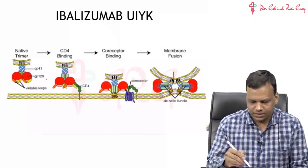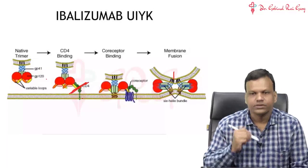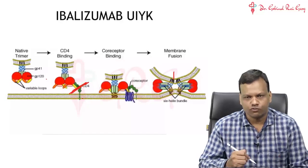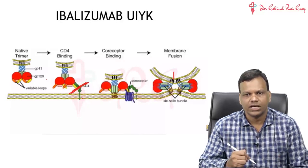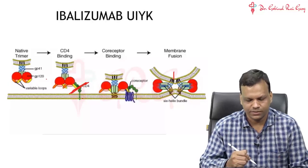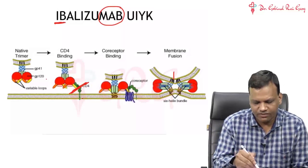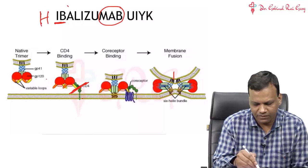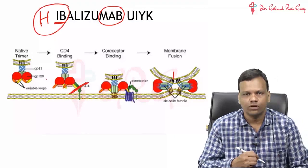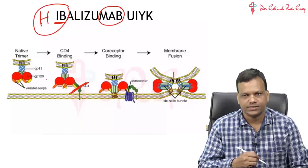Ibalizumab is inhibiting the binding of GP120 to CD4 cells. Basically, it is a monoclonal antibody against CD4 receptors. The name starts with IB, it is a monoclonal antibody. The name starts with IB; if we write H in front, it becomes HIV. So it's used for human immunodeficiency virus.